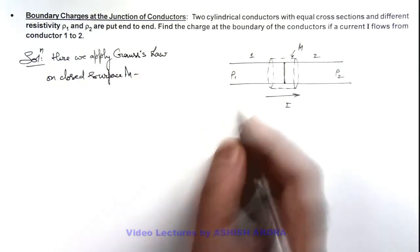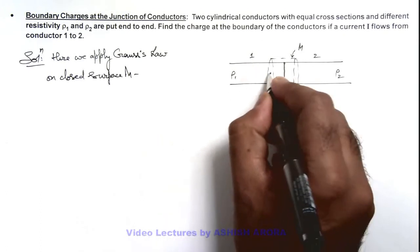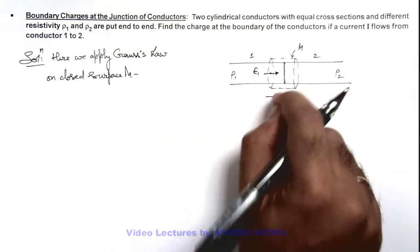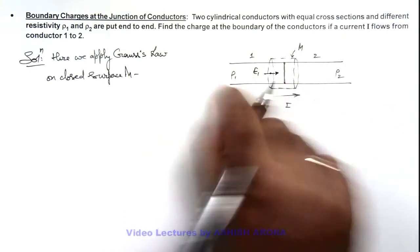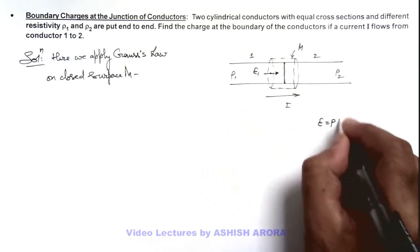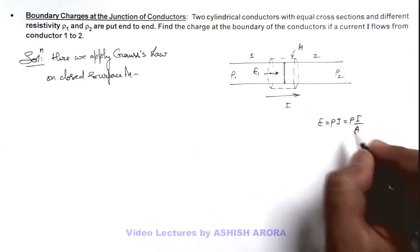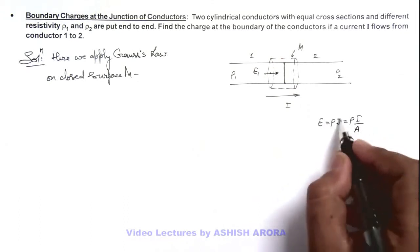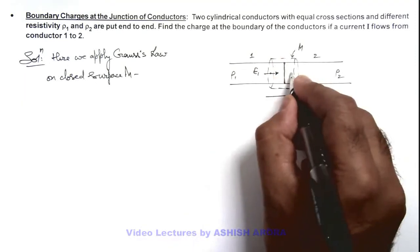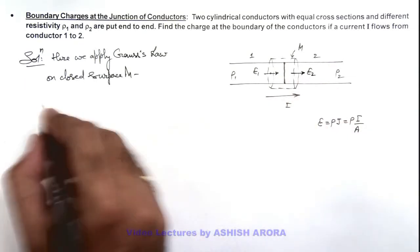In this situation, say this is a point in conductor 1 where electric field is considered to be E₁. We know the direction of electric field is along the direction of current or current density, and the value of electric field is given as ρj, or it is ρi/A, where ρ is the resistivity and j is the current density. In this situation, the electric field in conductor 2 is considered to be E₂. Then here we can write, applying Gauss's law on this surface M: